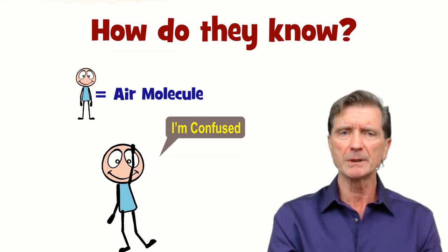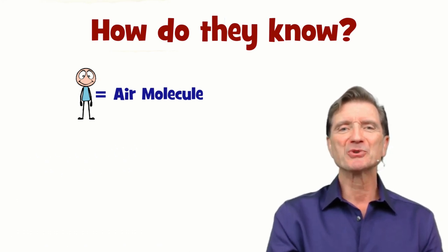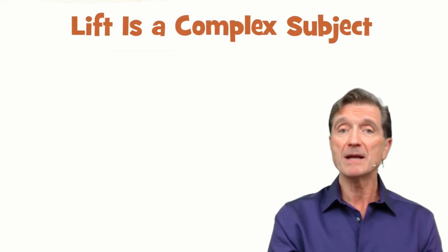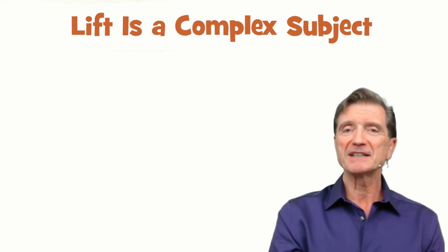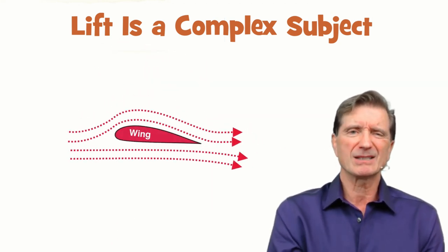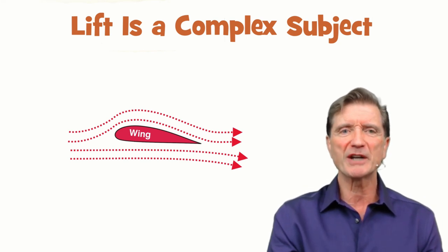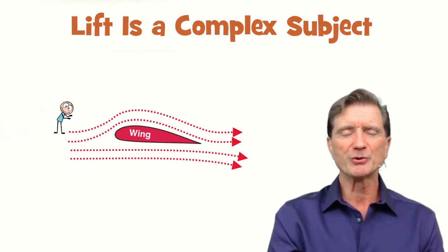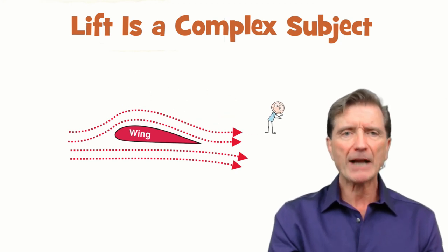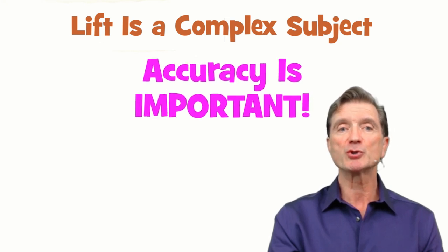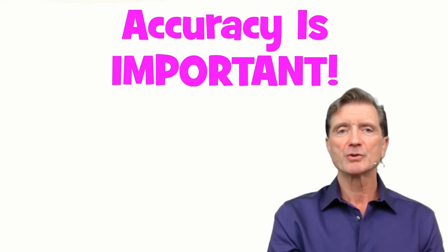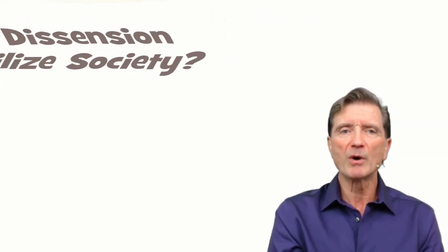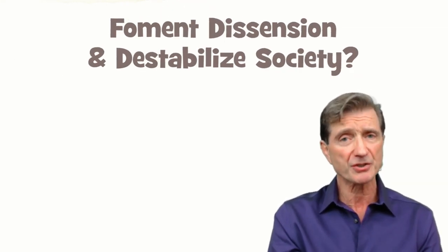Respect for air, please. The equal transit explanation is nothing more than a very basic introduction to aerodynamics, and it's used by quite a few prominent aviation authors. It's a perfectly acceptable ab initio introduction to lift, and at least it's not any stranger than having a few folks pretend that air molecules are tiny little people. Nevertheless, accuracy is important, and an accurate explanation should always follow a less than precise one whenever appropriate and whenever possible.